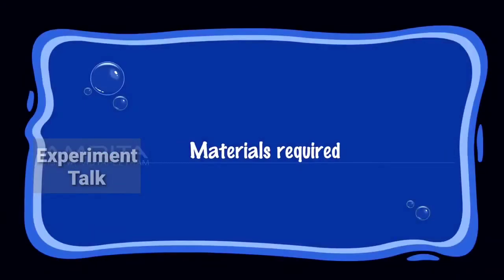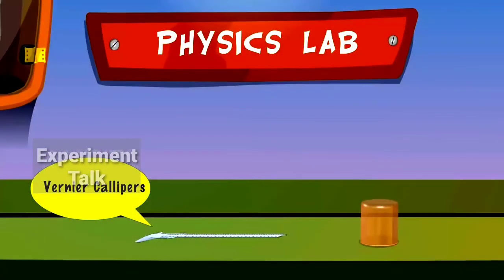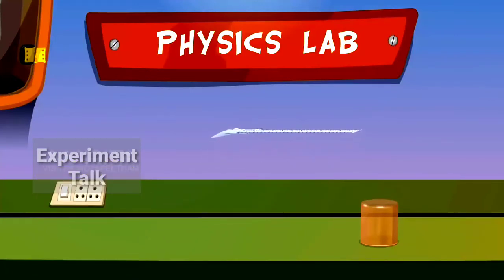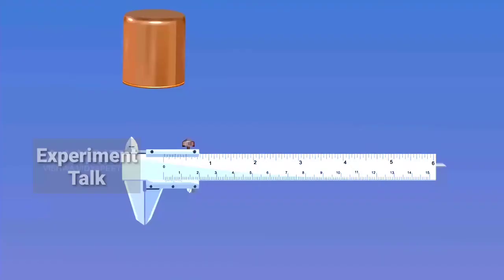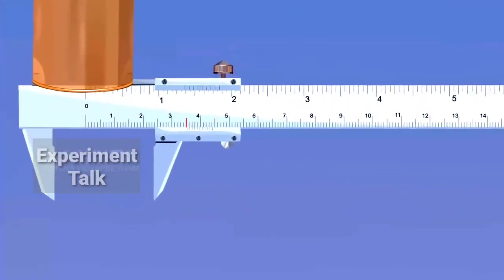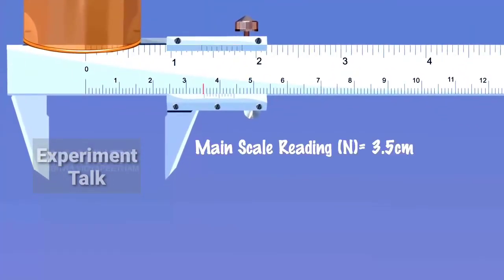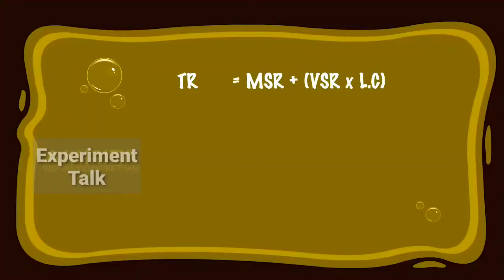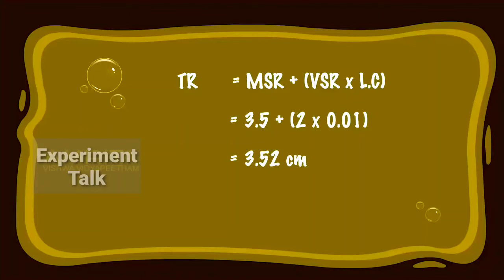Beaker. Materials Required: Vernier Calipers and a Beaker. Take the Vernier Calipers and the Beaker. Place the beaker upside down over the internal measuring jaws and fix it tight. Note down the main scale reading and the Vernier scale reading. Calculation: TR is equal to MSR plus VSR into least count, which is equal to 3.5 plus 2 into 0.01, that equals 3.52 cm.